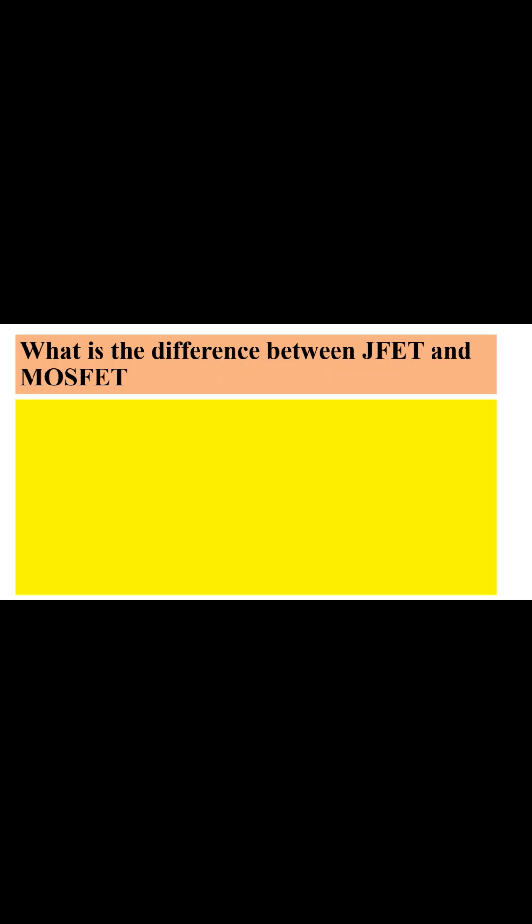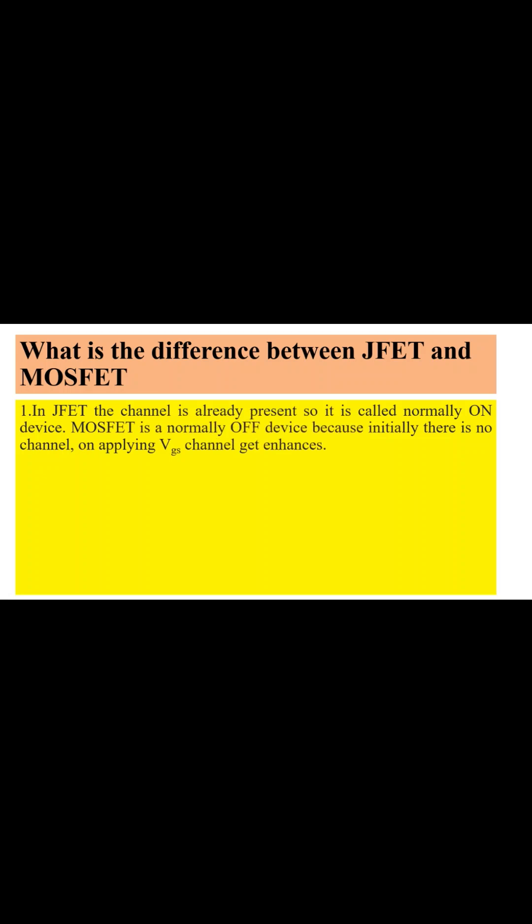What is the difference between JFET and MOSFET? In JFET, a channel is already present, so it is normally called a normally-on device. MOSFET is a normally-off device because initially there is no channel present. On applying VGS, the channel gets enhanced.